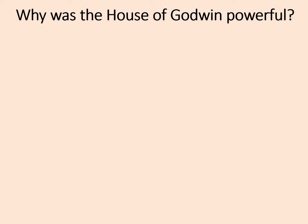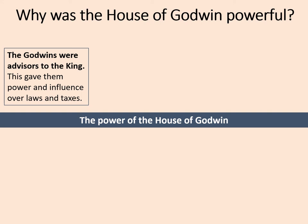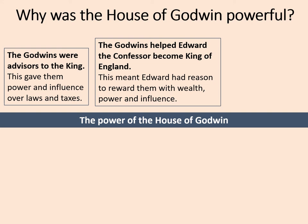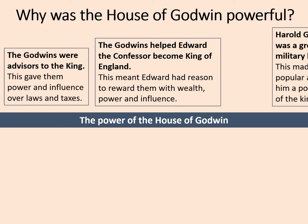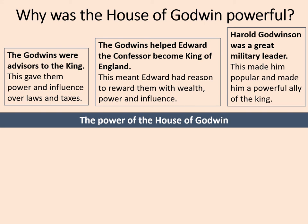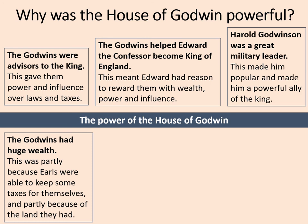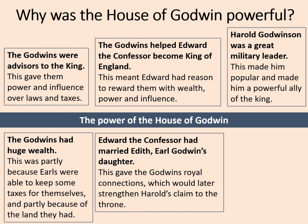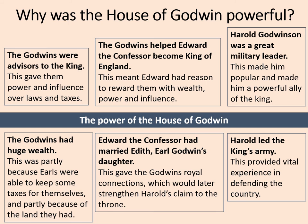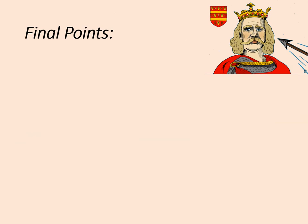So why was the House of Godwin quite so powerful? The Godwins were advisors to the king, which gave them power and influence over laws and taxes. The Godwins helped Edward the Confessor become King of England, meaning Edward had reason to reward them with wealth, power, and influence. Harold Godwinson himself was a great military leader, making him popular and a powerful ally of the king. The Godwins had huge wealth, partly because the earls were able to keep some of the taxes for themselves and partly because of the land they held. Edward the Confessor had married Edith, Earl Godwin's daughter, giving the Godwins royal connections which would later strengthen Harold's claim to the throne. And Harold led the king's army, providing vital experience in defending the country.